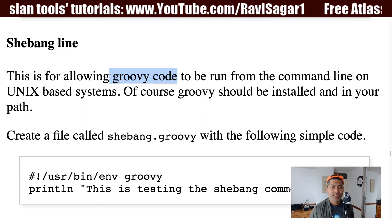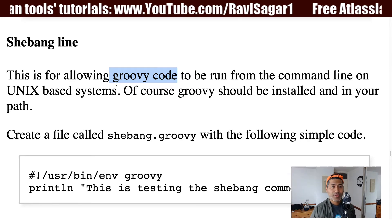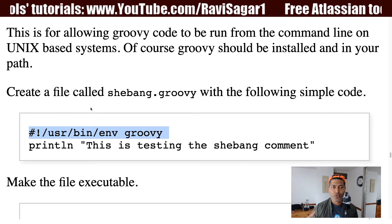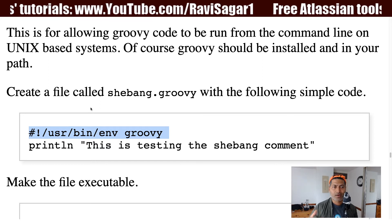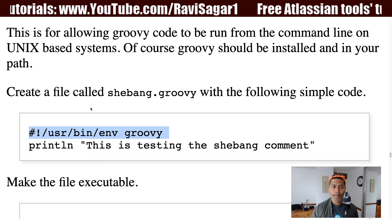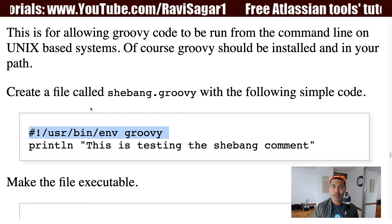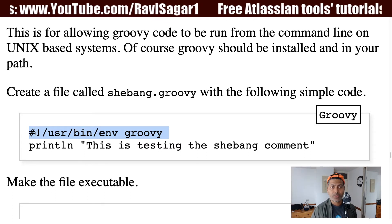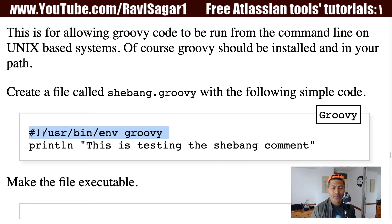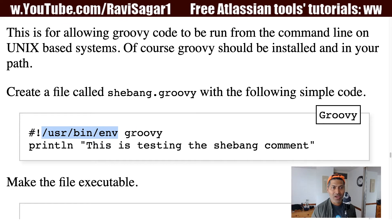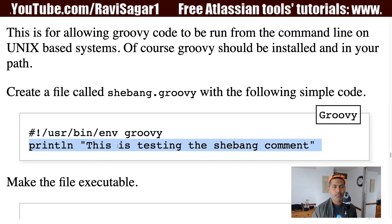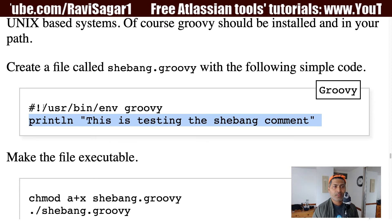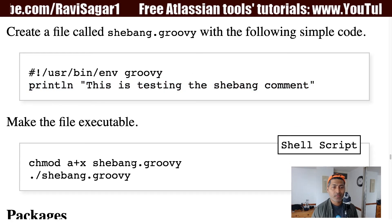If your Groovy code is stored in a file that you want to execute, you need to define the environment — basically the path where Groovy is installed — so the file knows it needs a Groovy environment to run. You start with a hash followed by an exclamation mark, then the path to your Groovy environment. You also need to make the file executable before running it.